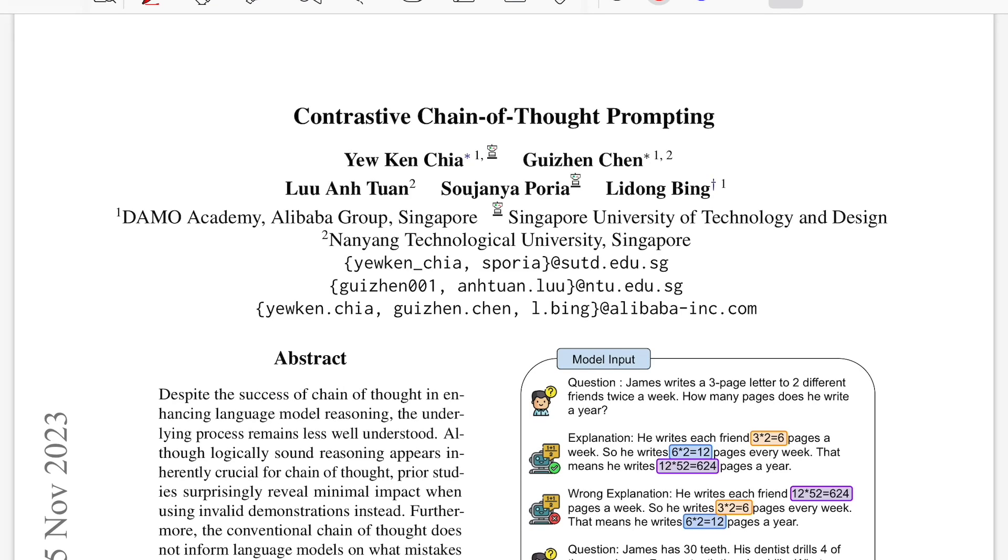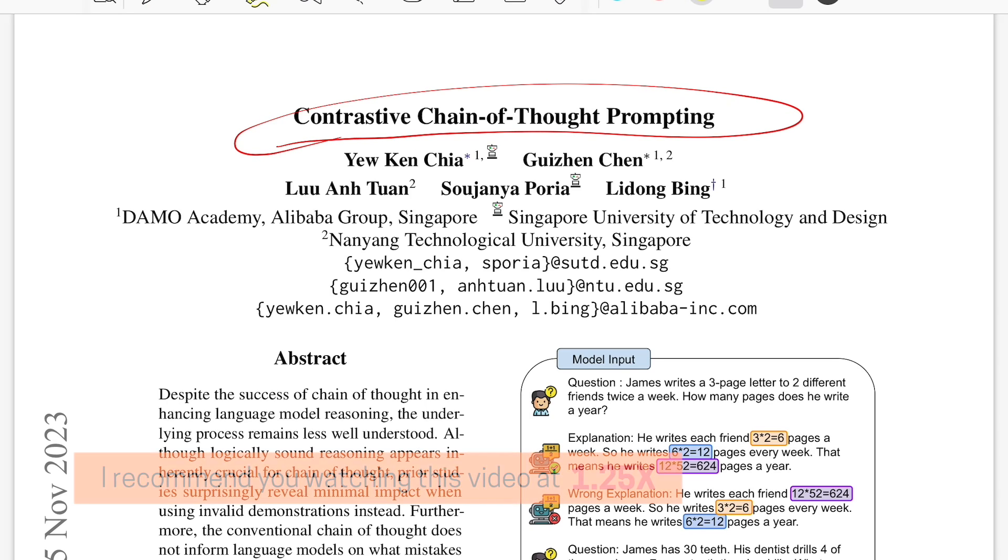Hello everyone, welcome back to the new video. Today we'll be talking about this paper titled Contrastive Chain of Thought Prompting. It's from researchers from Alibaba Group, Singapore Technical University and Nanyang Technical University.